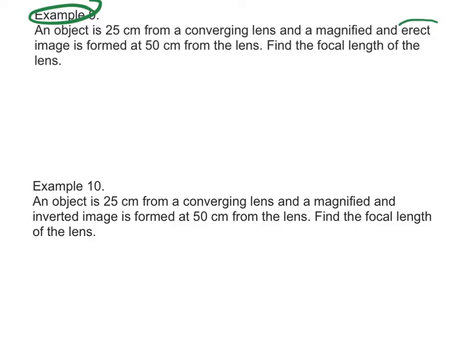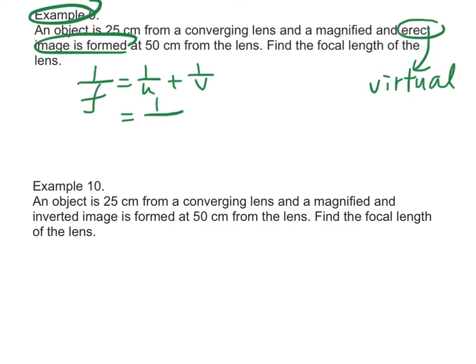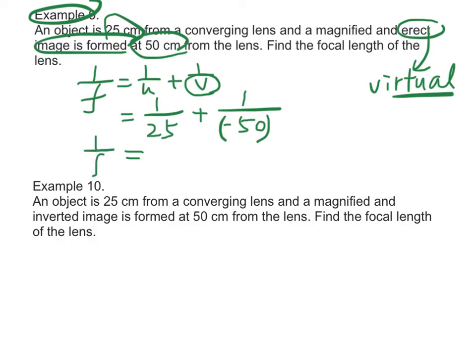Example 9: Since the image is erect, it is a virtual image. Using the lens formula 1/f = 1/u + 1/v, u = 25 cm. Since it is a virtual image, the image distance is 50 cm but we substitute v = −50 into the formula. Therefore, 1/f = 1/25 + 1/(−50), giving a focal length of 50 cm.